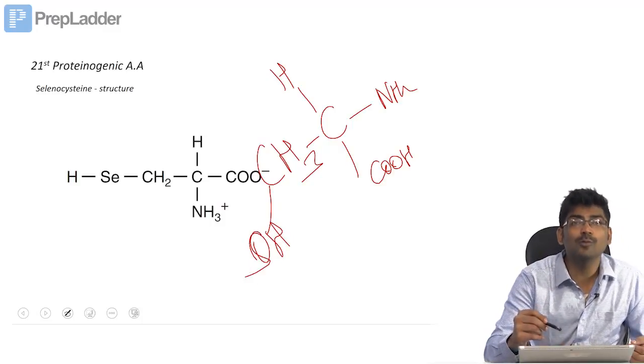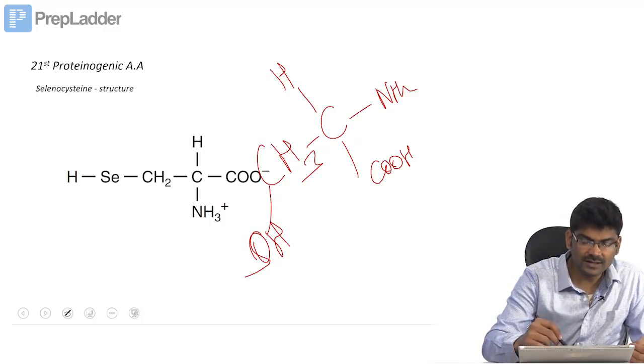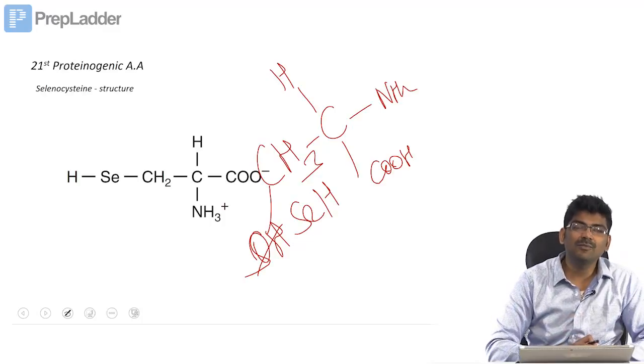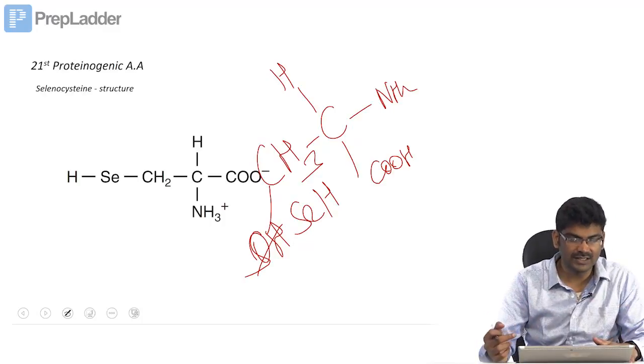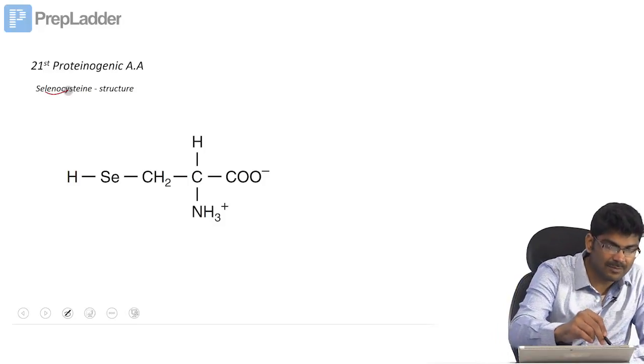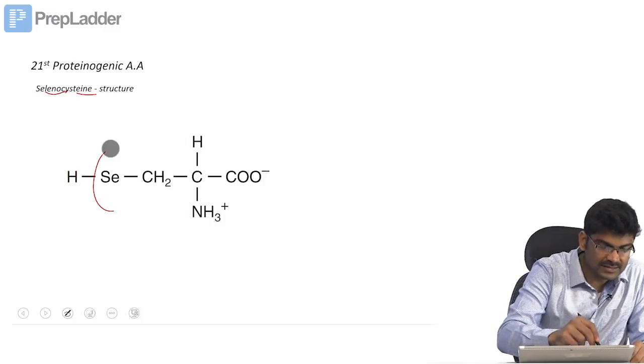If you put an SH group in alanine, that will be your cysteine. Instead of SH, if you put selenium, that will become your selenocysteine. That is why selenocysteine is named because of the cysteine. There is a selenium.